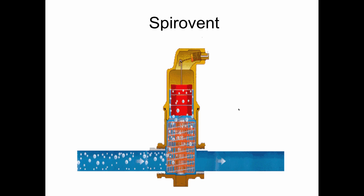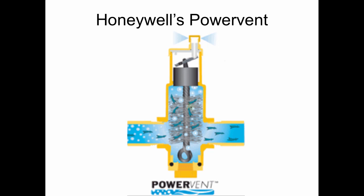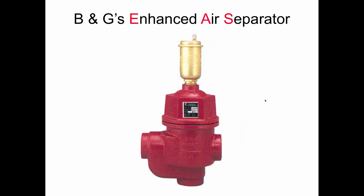Any air separator will get rid of the air eventually if it's installed properly in a closed hydronic system. Honeywell bought from a company called Sparco this air separator and renamed it the Power Vent — it's similar to the Spirovent but, not being able to use that proprietary element, they decided to use a fitting brush. I love this — if you can make an air separator out of a fitting brush, it just goes to show that if you can't make money in America you're just not paying attention. Bell and Gossett also came out with their wonderfully named Enhanced Air Separator, which also has a fitting brush inside, and it works pretty well too.